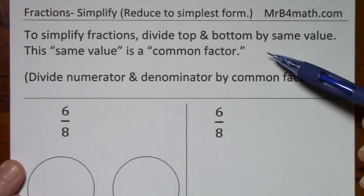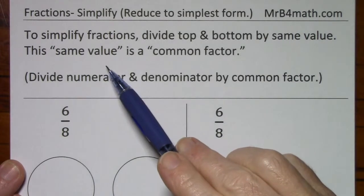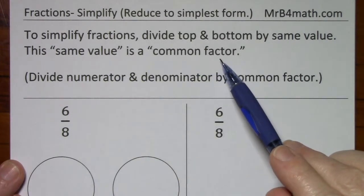To simplify fractions, divide top and bottom by the same value. This same value is a common factor.